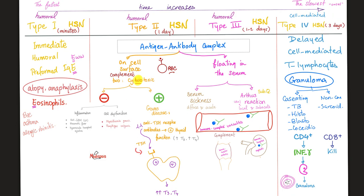Type 4 is the most delayed — about 72 hours. It's cell-mediated: T lymphocytes go face-to-face with the pathogen. Cytotoxic T cells kill directly. If they can't kill the invader, they surround it in a granuloma. Granulomas can be caseating, as in tuberculosis, histoplasmosis, blastomycosis, and coccidioidomycosis, or non-caseating, as in sarcoidosis. CD4 T lymphocytes secrete interferon-gamma, which stimulates macrophages to form the granuloma.